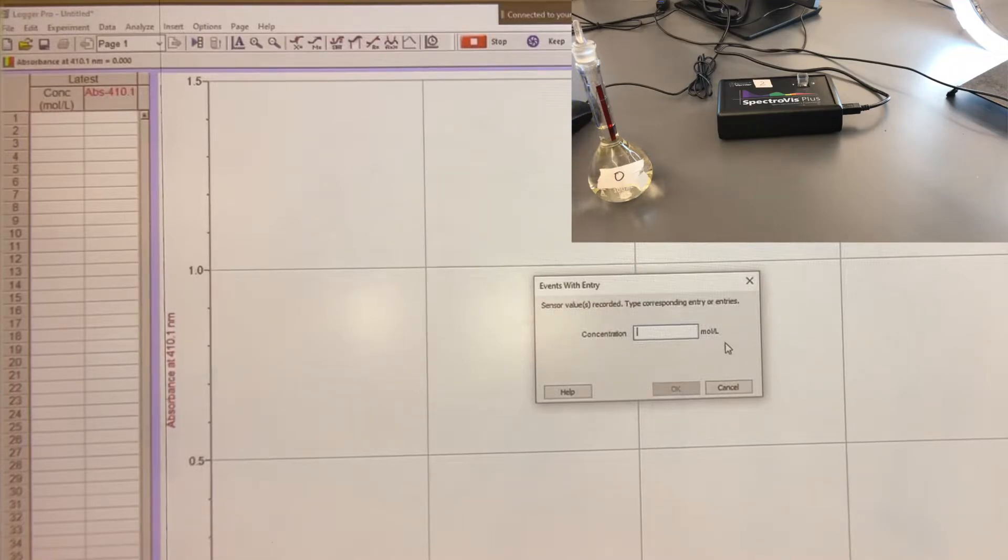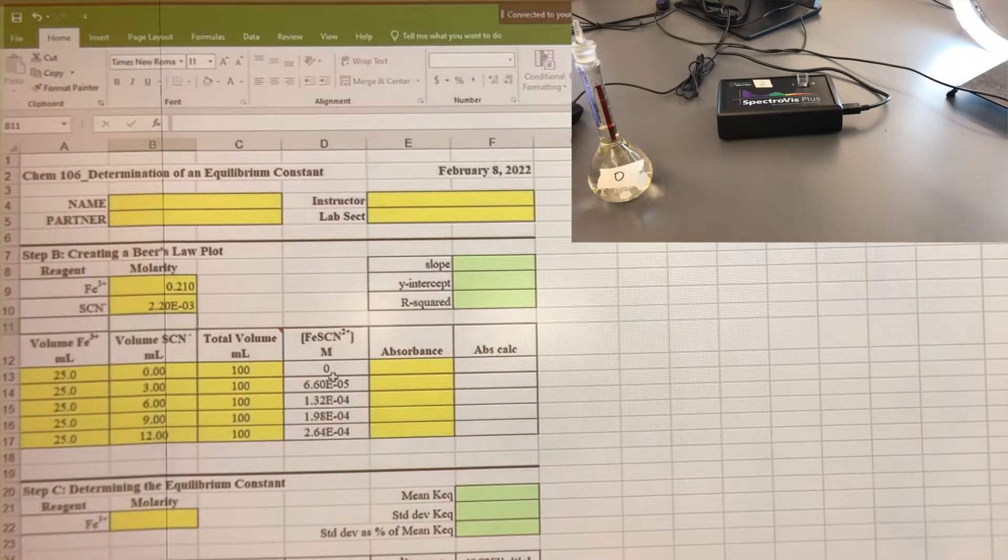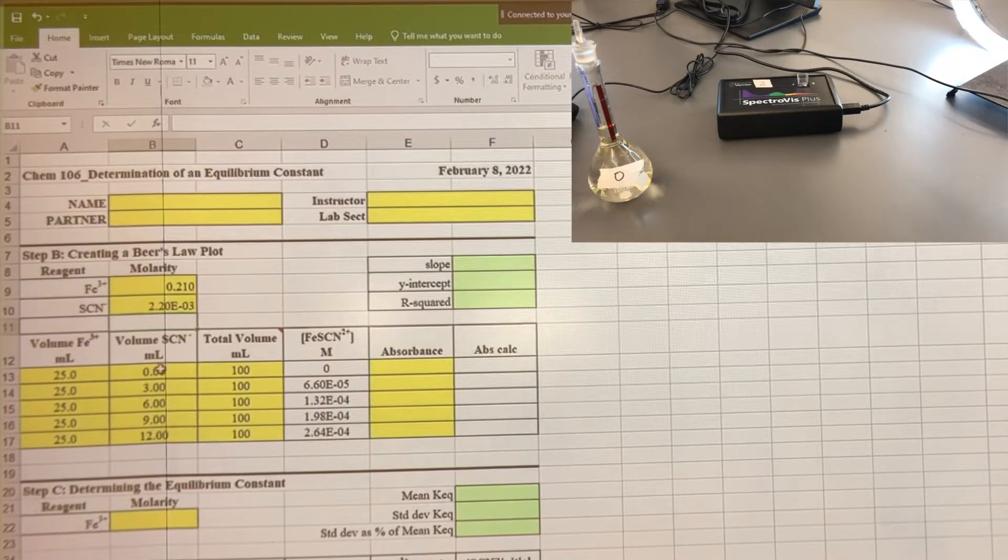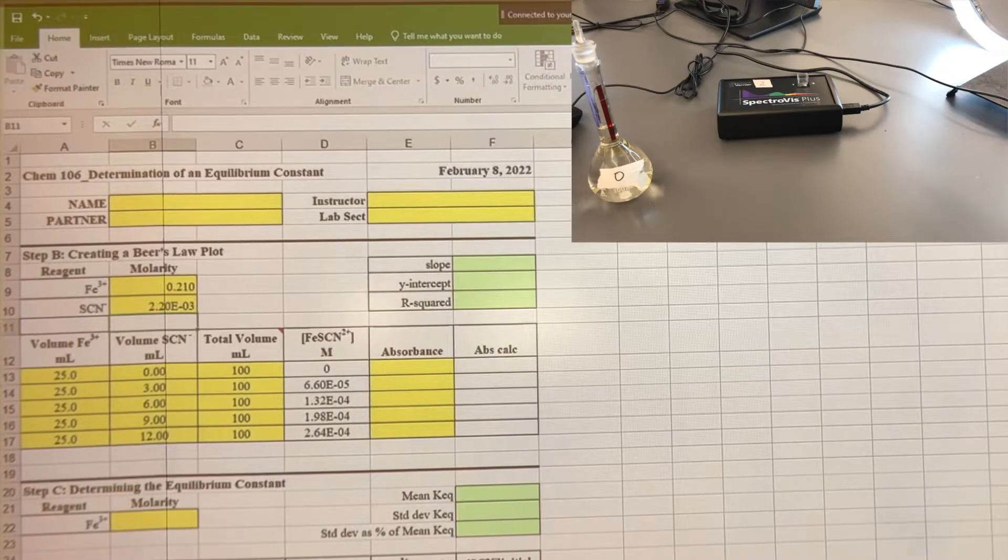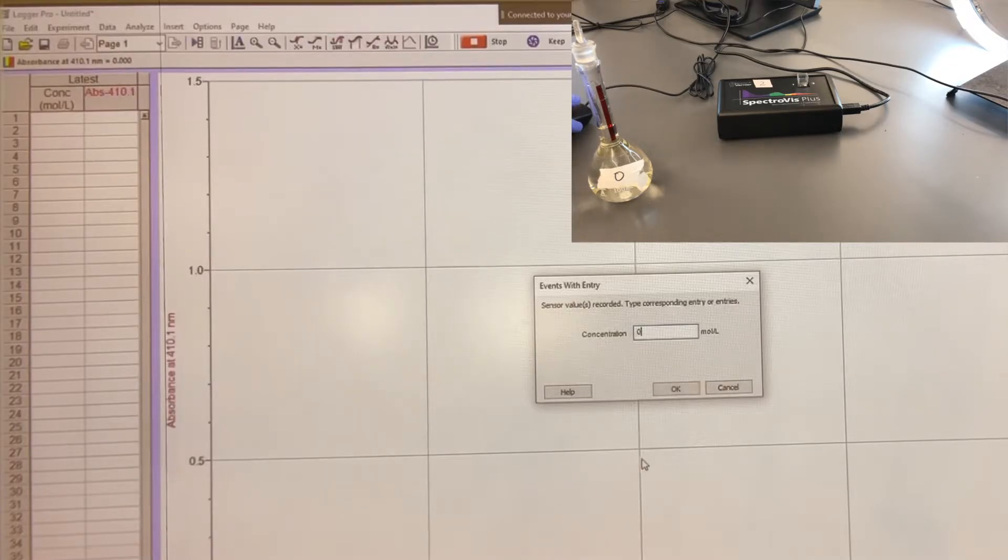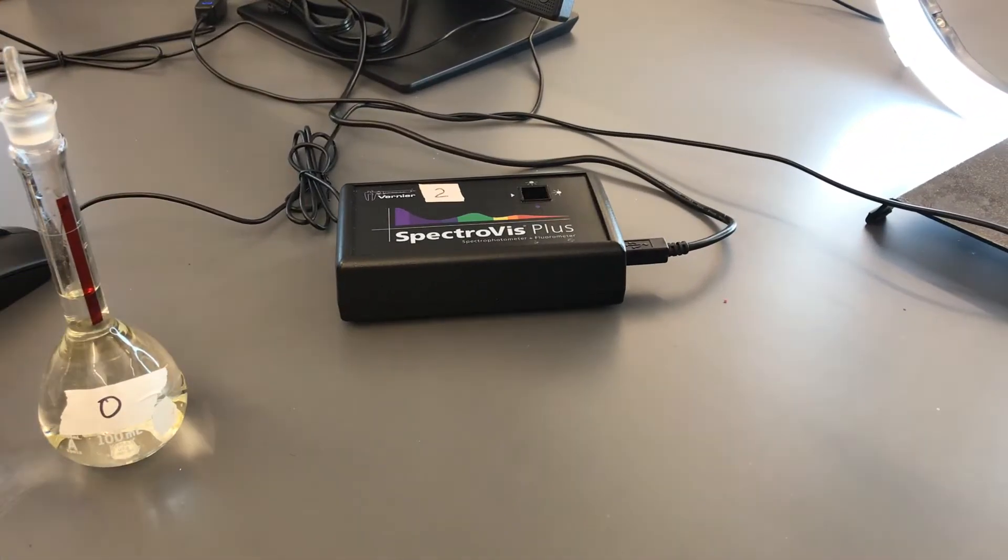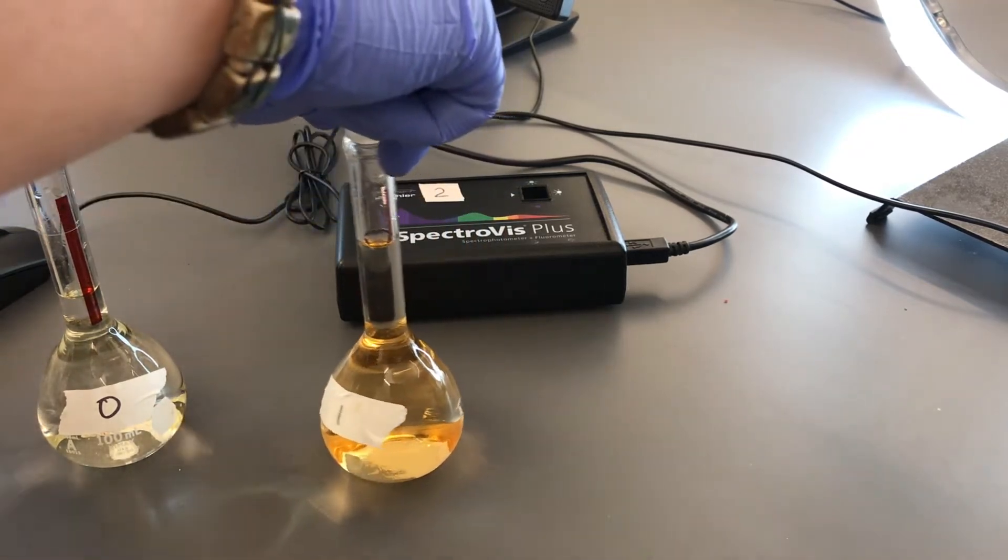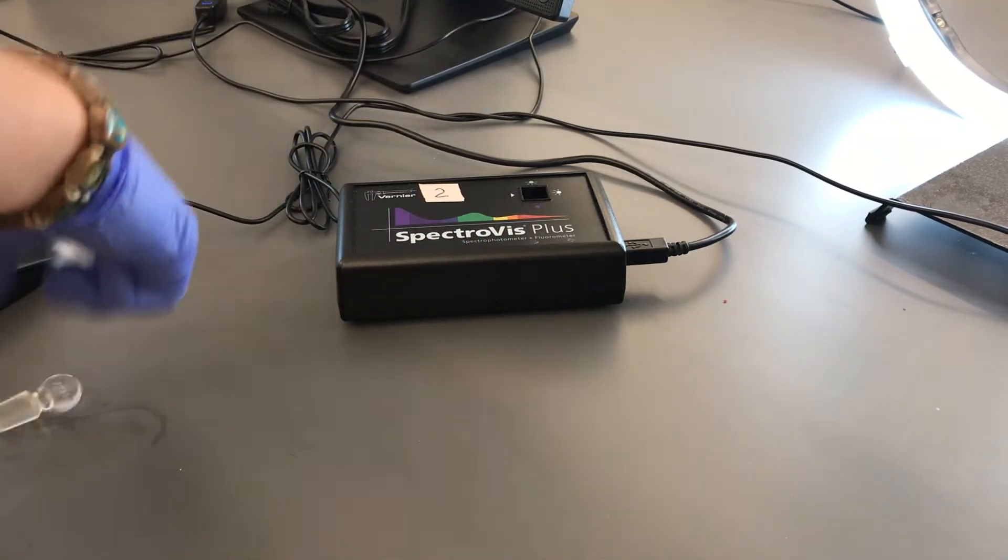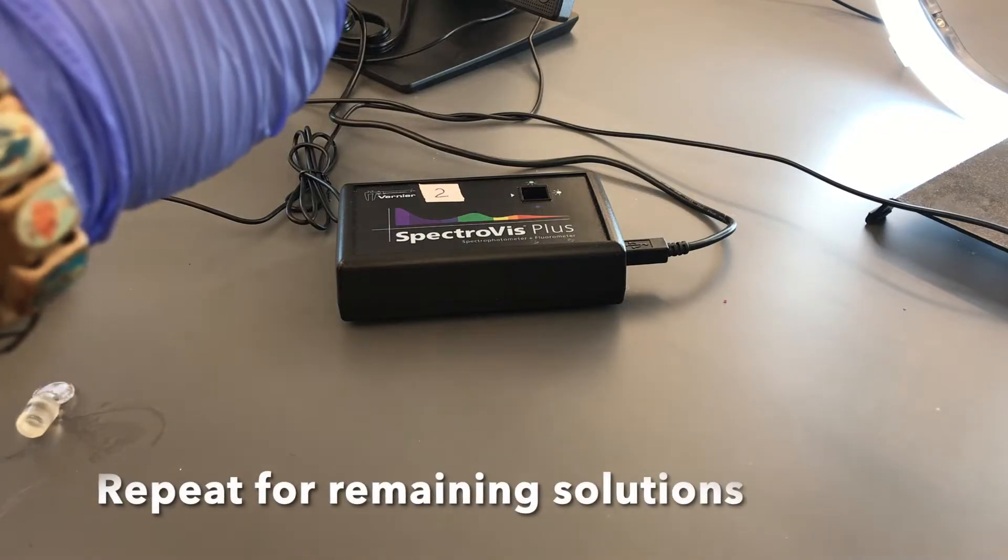Concentration of this solution, of the complex that was formed, is 0 because we didn't put any sodium thiocyanate in there. There's no complex that formed with that iron. So it's 0. That'll be our first one. And then we get a new fresh cuvette so that we can do our number 1. And we'll essentially keep each of our absorbance values.